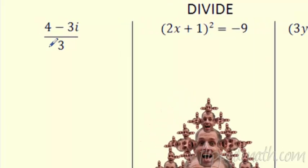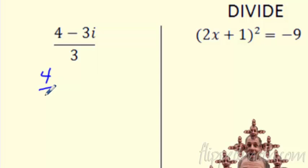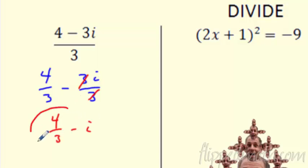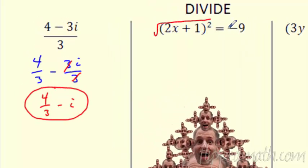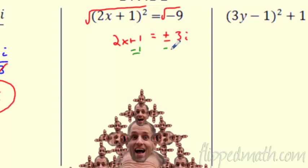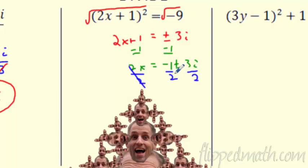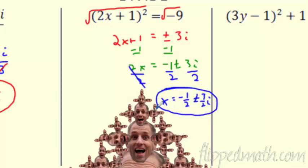For division with a complex number over a real number, you can split the fraction. For example, (4 − 3i)/3 becomes 4/3 minus 3i/3, and the 3's cancel to give 4/3 minus i. For solving equations: take the square root of both sides to get 2x + 1 equals plus or minus 3i. Subtract one to get 2x equals negative one plus or minus 3i, then divide by two: x equals negative one-half plus or minus three-halves i.